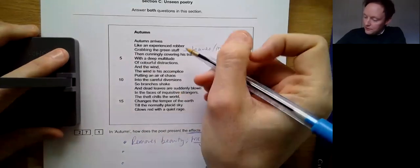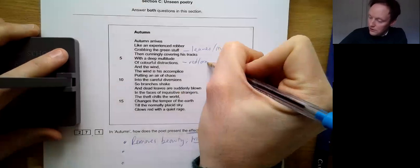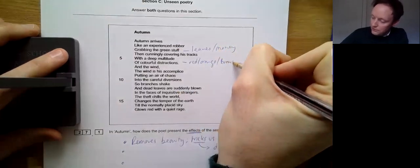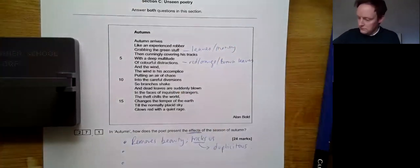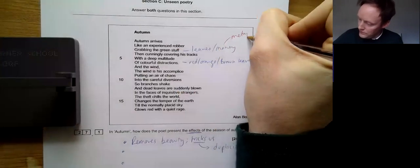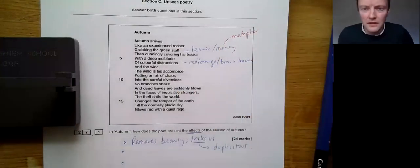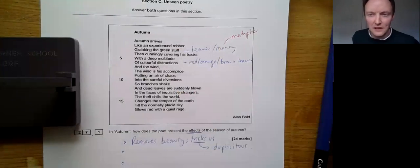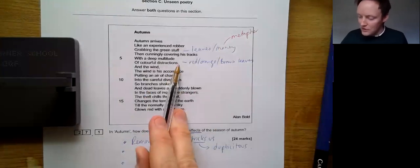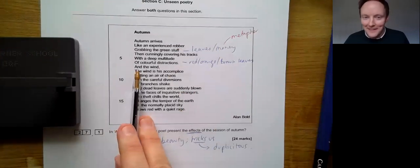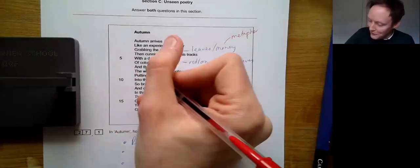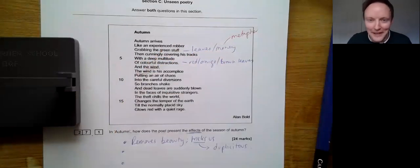So what are the colorful distractions? Red, orange, brown leaves. If I want to identify methods, which is less important, but useful all the same, I recognize that green stuff is perhaps a metaphor. I don't have an end stop on line seven, and the wind, the wind, the wind is his accomplice. So note that I love that little repetition of it. It's like, oh, can you believe it? And the wind, the wind is his accomplice.